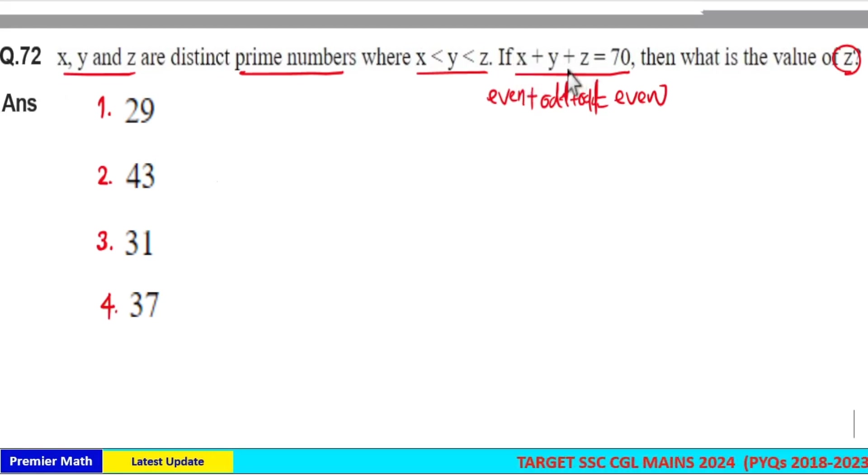That means here from x, y and z, one number should be an even number. There is only one even prime number which exists, which is 2. And 2 is the smallest prime number, which means here x is the smallest, so x should be 2.